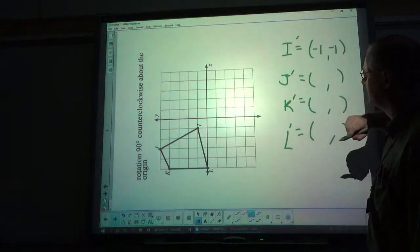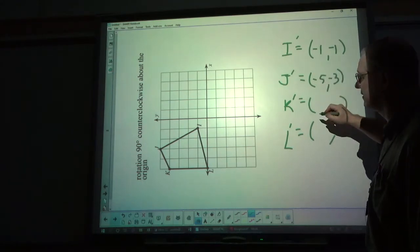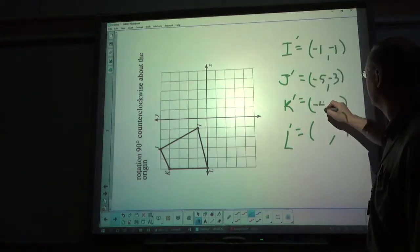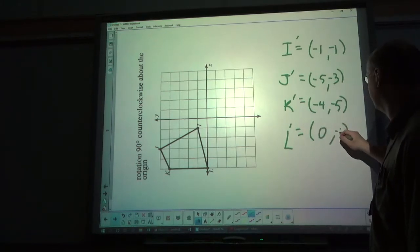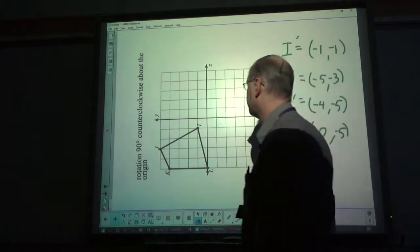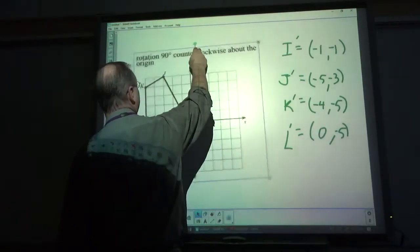J, negative 5, negative 3. K, negative 4, negative 5. And L, 0, negative 5. I move it back.